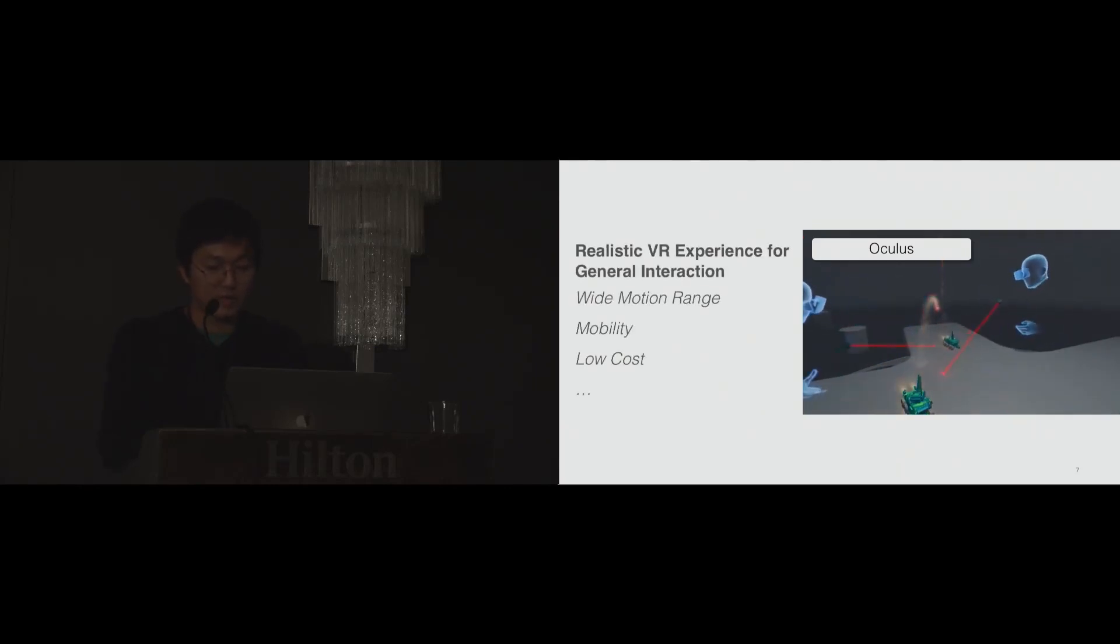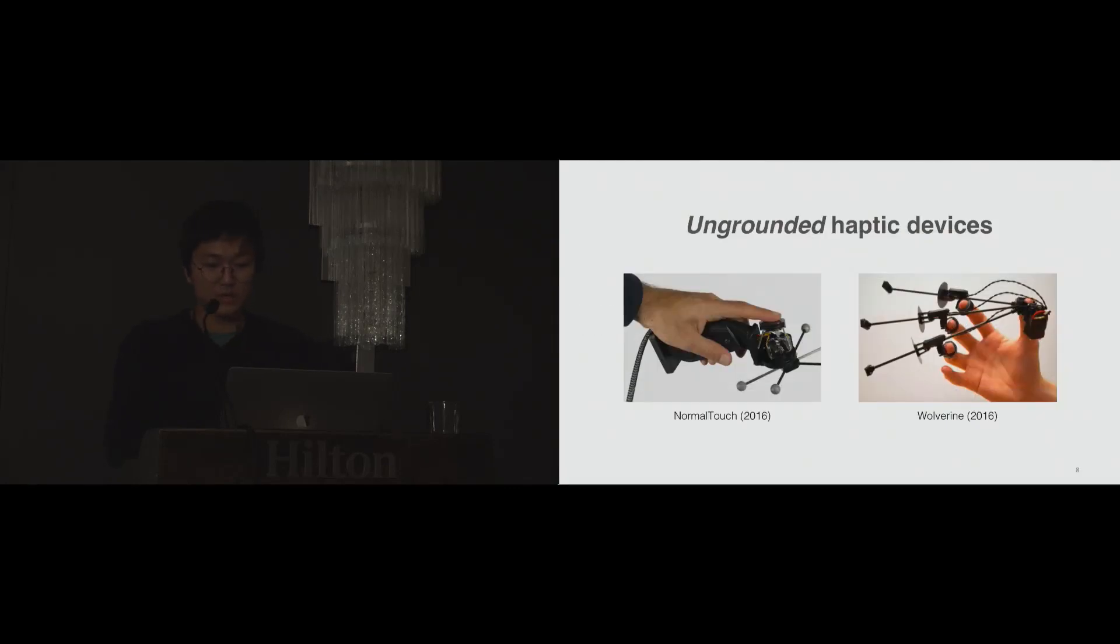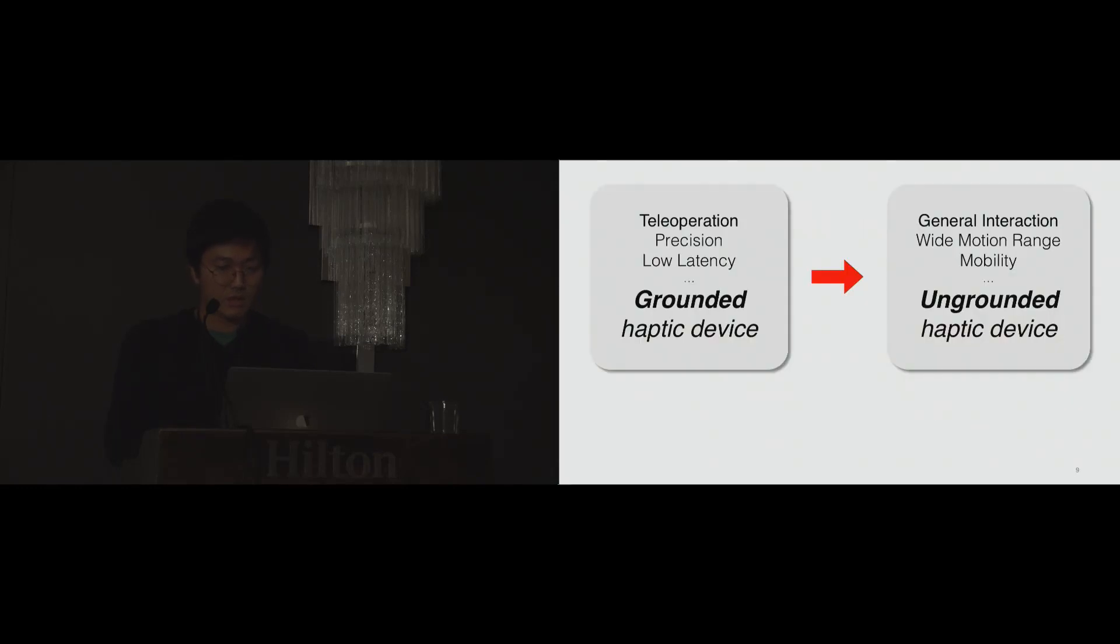For general interaction in commercial VR, wide motion range, mobility, and low cost are perhaps more important properties. Because of that, there are many research projects recently about ungrounded haptics. We see that the form factor of haptic devices needs to change. We believe ungrounded haptic devices are more suitable for commercial VR haptics because they have a wide range of motion.